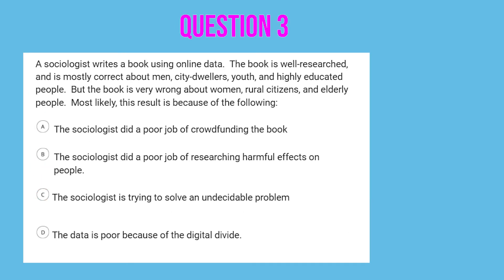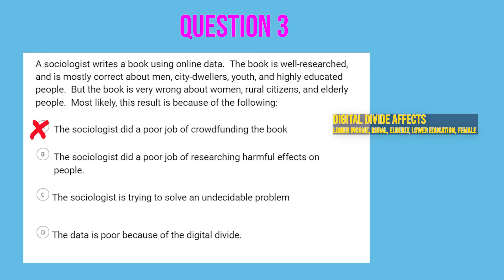For the previous two problems we identified effects of the digital divide. For this problem we flip it — we give you the effects and need you to see that it is caused by the digital divide. A sociologist writes a book using online data. The book is well-researched and mostly correct about men, city dwellers, youth, and highly educated people, but the book is very wrong about women, rural citizens, and elderly people. When you see women, rural citizens, elderly people, alarm bells should go off and you should be thinking about the digital divide right away.